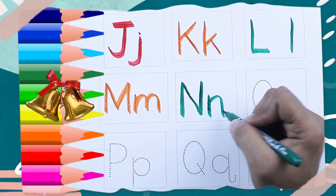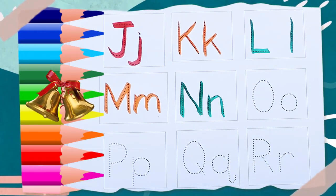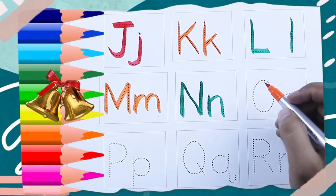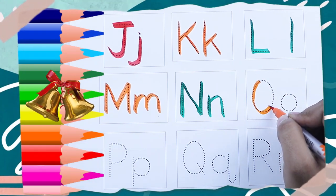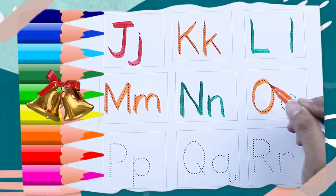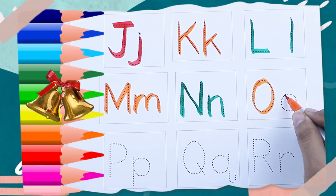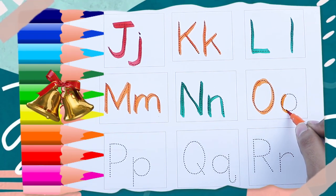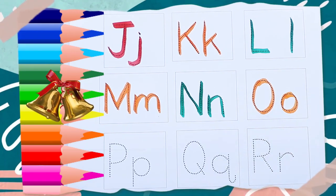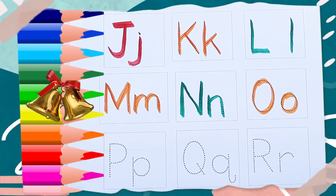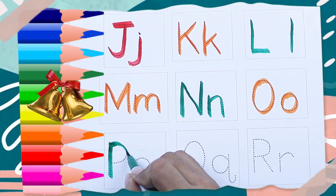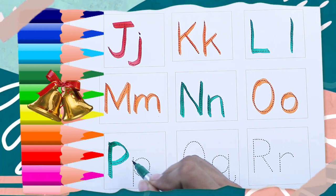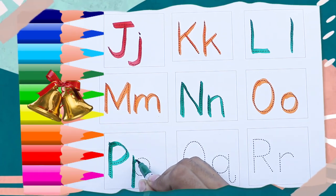Orange color capital O — O for Orange. Orange color small o — o for Orange. Green color capital P — P for Parrot. Green color small p — p for Parrot.